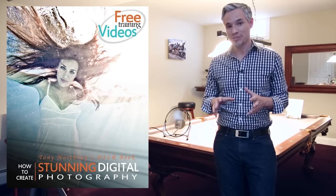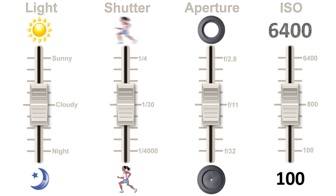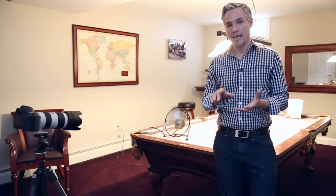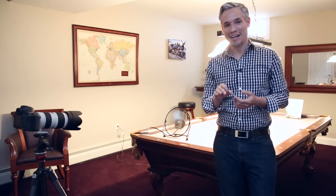Hi, I'm Tony Northrup, and for Chapter 4 of my book Stunning Digital Photography, I'd like to explain to you the relationship between shutter speed, aperture, ISO, and light. They are all connected to each other, and adjusting any one of them can be compensated for by adjusting any other. That's why I'm going to walk you through a series of tests with my camera here and this little lab setup that I've made, to show you exactly how everything works.